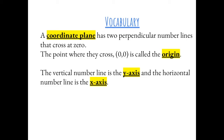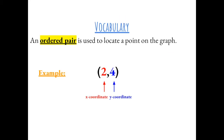A coordinate plane has two perpendicular number lines that cross at 0. The point where they cross, (0, 0), is called the origin. The vertical number line is the y-axis and the horizontal number line is the x-axis.